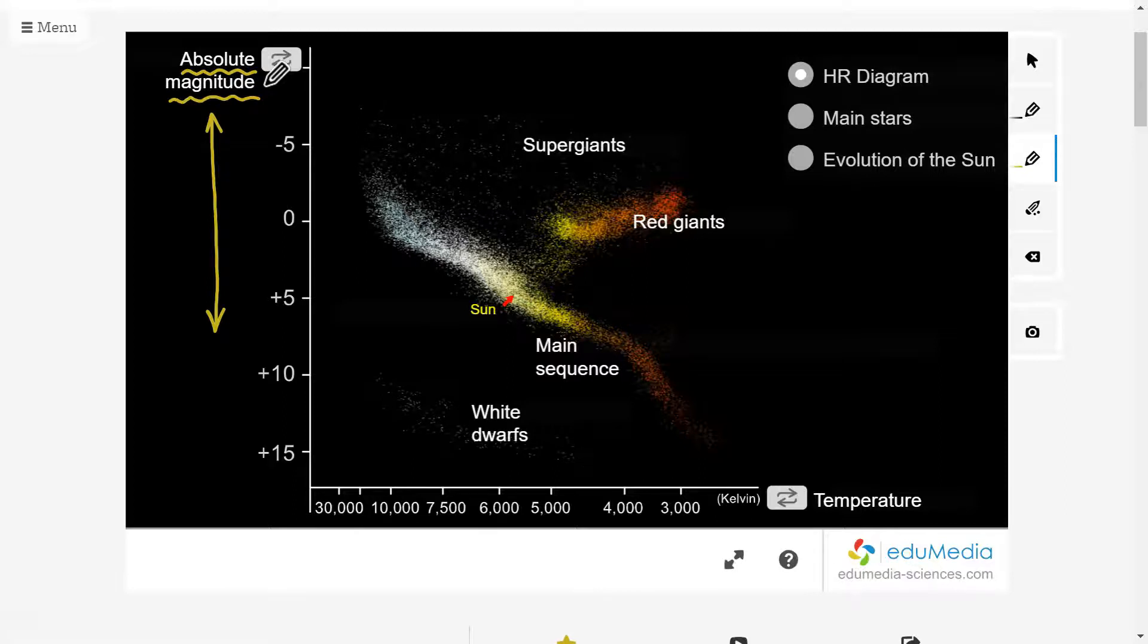The other dimension here along the x-axis is temperature in Kelvin. So that's absolute temperature scale. And one thing that you might notice, of course, if you're familiar with graphs, is that these are the large numbers on the left, and these are the smaller numbers on the right. That's a little bit backwards from what we're used to. But astronomers have found it very useful just to look at it that way.